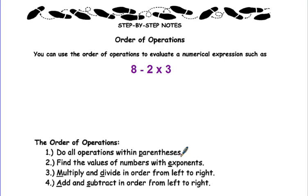So let's look at our rules. Step 1, do all the operations within parentheses. So that's the first thing you do. Step 2, find the values of numbers with exponents. Step 3, multiply and divide in order from left to right. Multiply and divide after you do parentheses and exponents. And the last thing you'll do is add and subtract in order from left to right.